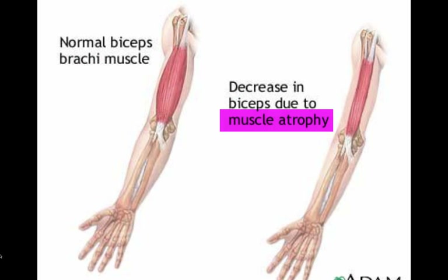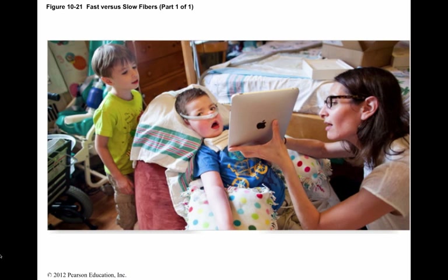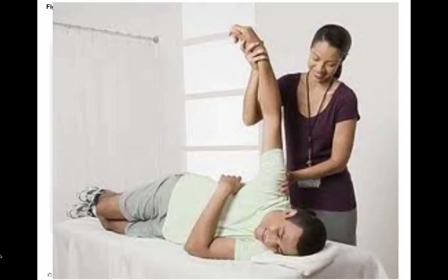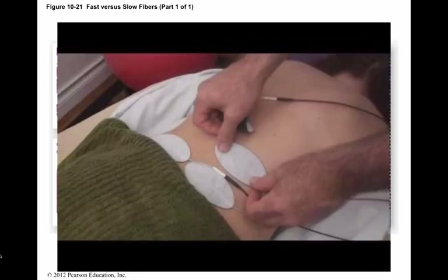A skeletal muscle that is not regularly stimulated by a motor neuron loses muscle tone and mass. The muscle becomes flaccid and the muscle fibers become smaller and weaker. This reduction in muscle size, tone, and power is called atrophy. Individuals paralyzed by spinal cord injuries or other damage to the nervous system gradually lose muscle tone and size in the areas affected. Muscle atrophy is reversible at first, but dying muscle fibers are not replaced. That is why physical therapy is crucial for people who are temporarily unable to move normally. Direct electrical stimulation by an external device can substitute for nerve stimulation and prevent or reduce muscle atrophy.